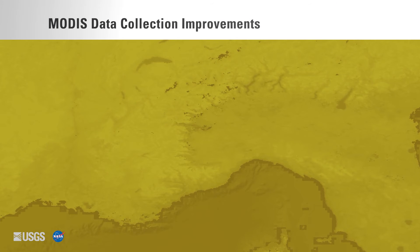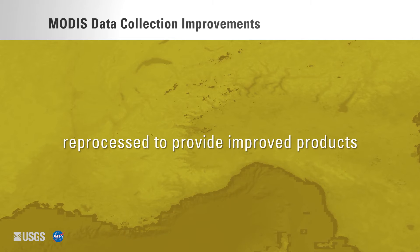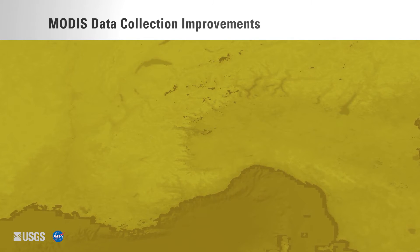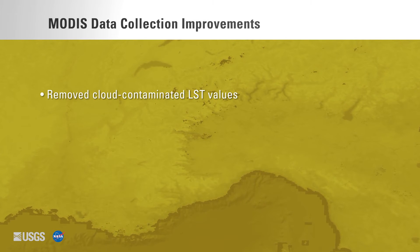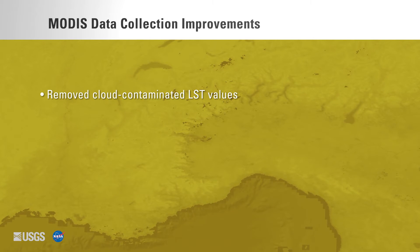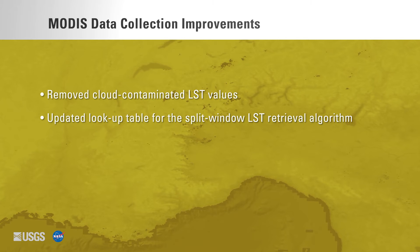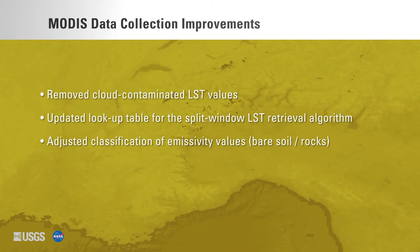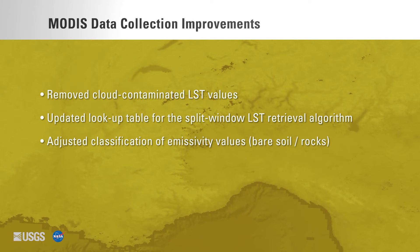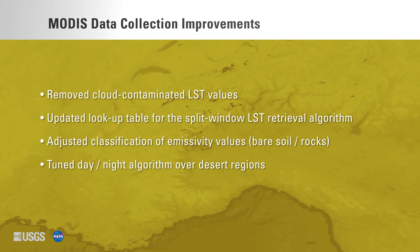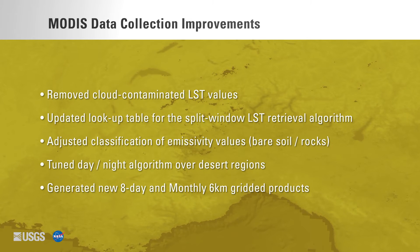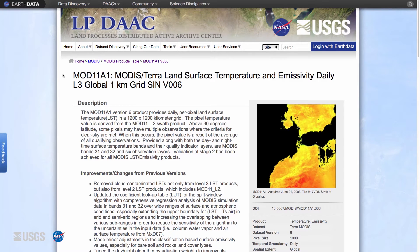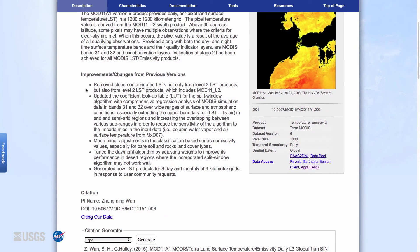The MODIS data collection is reprocessed into a new version every so often to provide users with improved products. Improvements in version 6 include: removal of cloud-contaminated land surface temperature values from both level 2 and level 3 products; updates to the lookup table for the split window algorithm; minor adjustments in the classification-based surface emissivity values for bare soil and rocks; improvements to the tuned day-night algorithm for better performance over desert regions; and the addition of two new 8-day and monthly 6-kilometer gridded land surface temperature products.